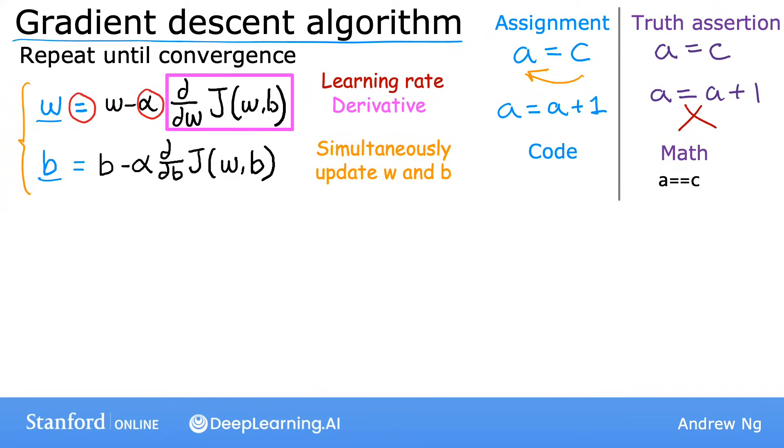What I mean by that is that in this expression, you're going to update w from the old w to a new w, and you're also updating b from its old value to a new value of b. And the way to implement this is to compute the right side, computing this thing for w and b, and simultaneously at the same time update w and b to the new values.